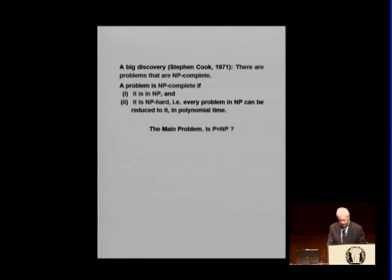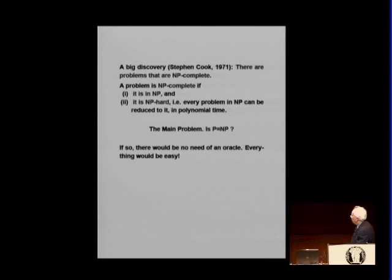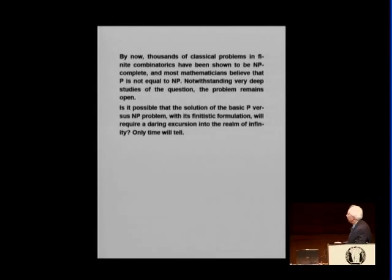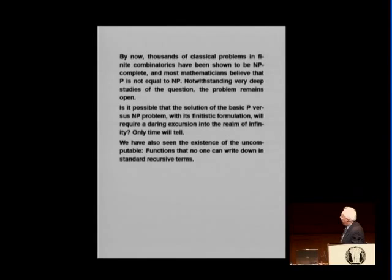And the big discovery is there are polynomial problems that are NP-complete, which means every problem in NP can be reduced to that particular problem quickly. What does it mean? Now, the question is, it means that if one of these problems NP-complete is polynomial, then everything in NP is polynomial. Because you can reduce to that problem and then solve it. So, this is the main question. Is P equal to NP? Well, if you solve this question, you will get $1 million from the Clay Foundation.